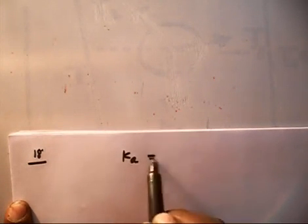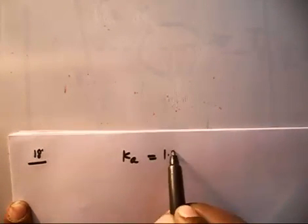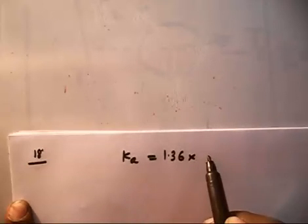Let us discuss the next problem, problem number 18. This problem says chloroacetic acid has a Ka value of 1.36 × 10⁻³.